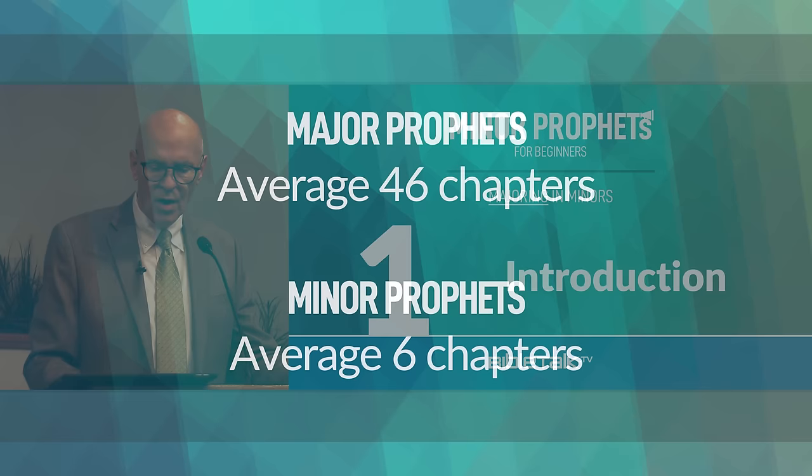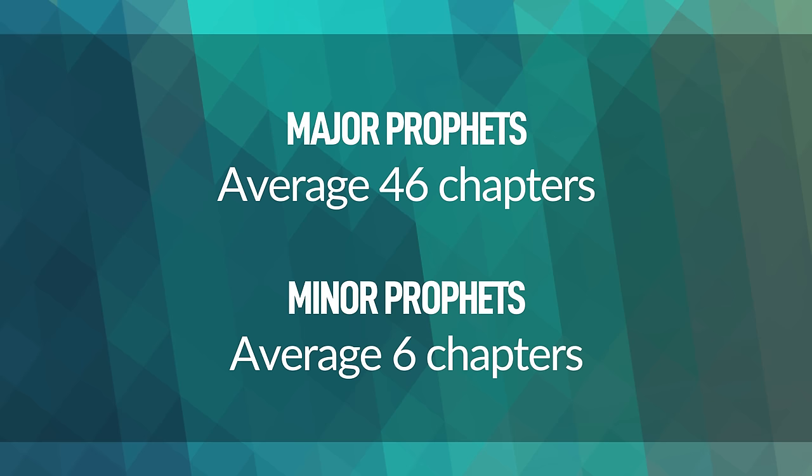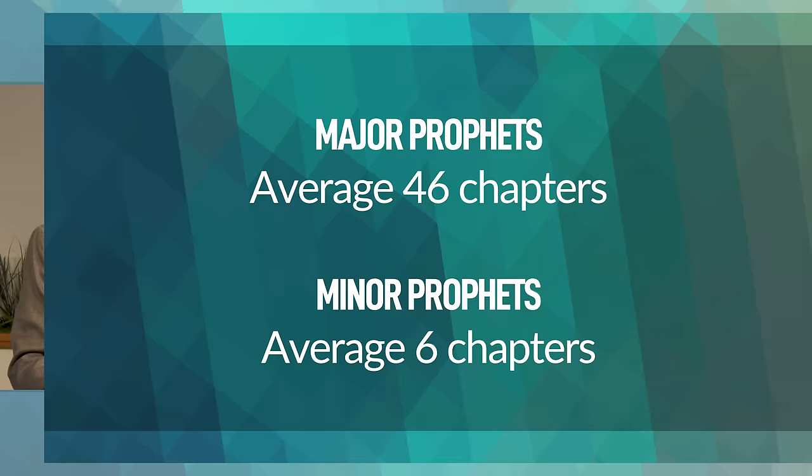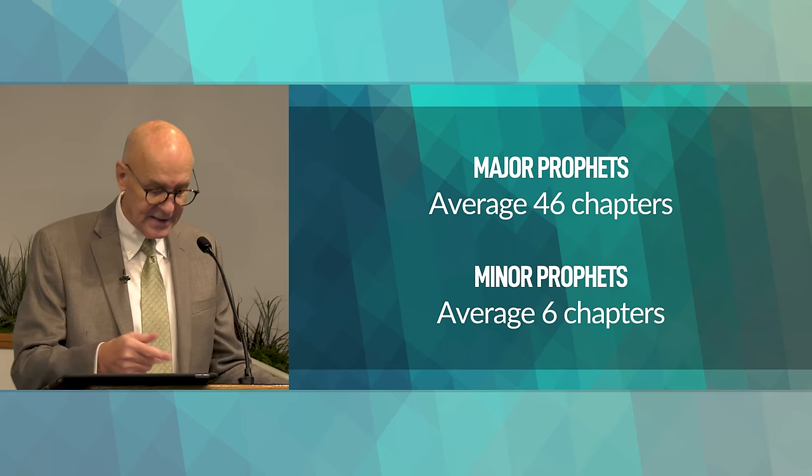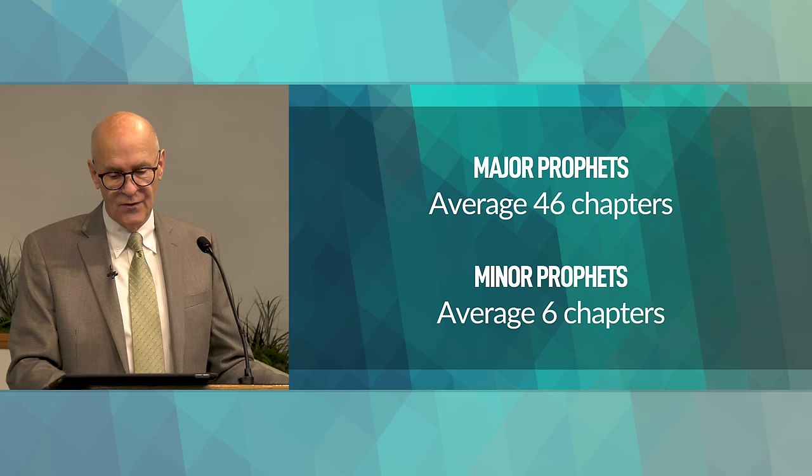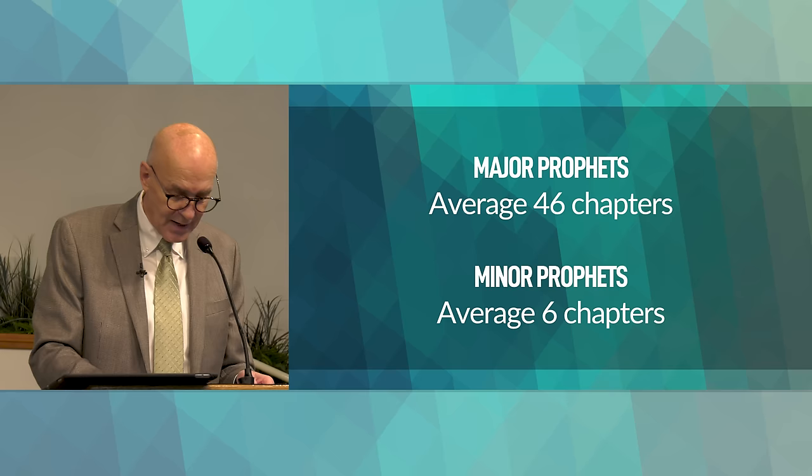A little math here: when examining the Major Prophets, Isaiah's book has 66 chapters, Jeremiah's 52 chapters, Lamentations 5 chapters, Ezekiel's 48 chapters, Daniel's 12 chapters — an average of about 46 chapters for the Major Prophets. The average length of the 12 Minor Prophets books is about six chapters. So they are named based on length, not importance.